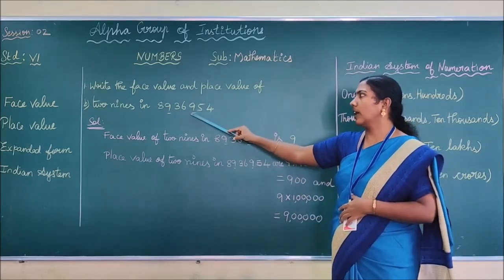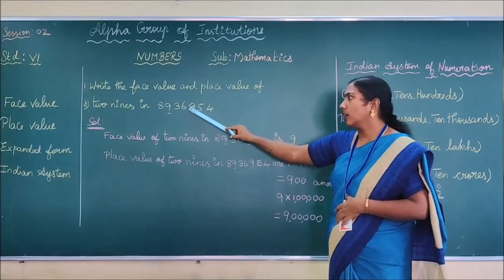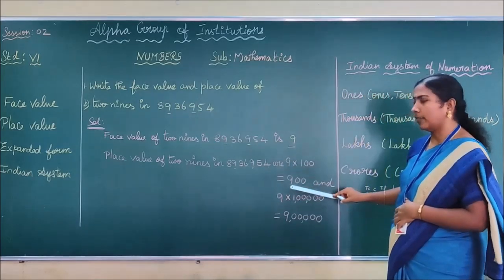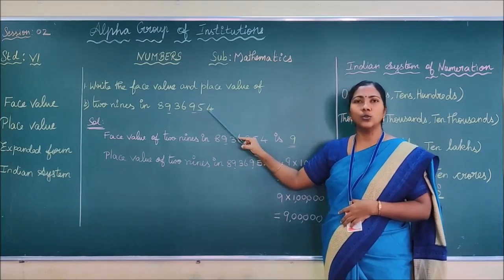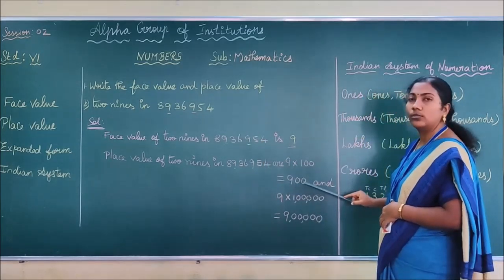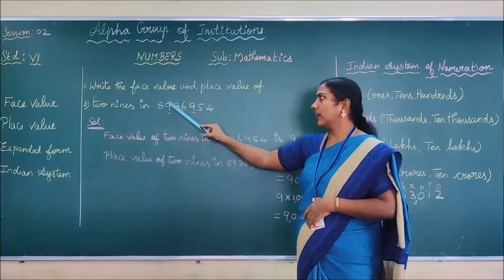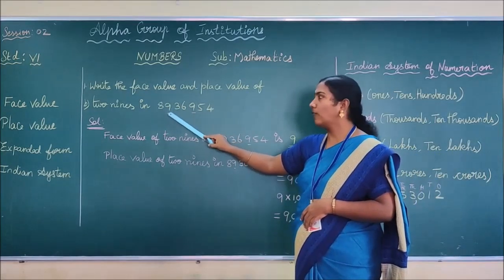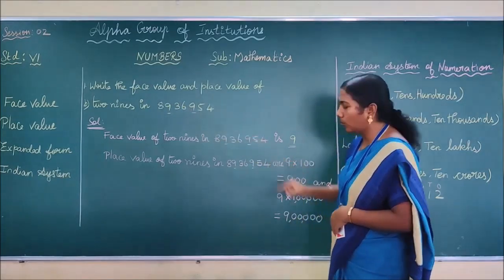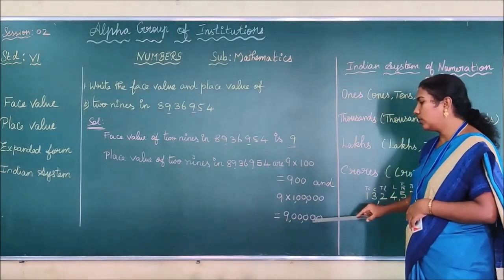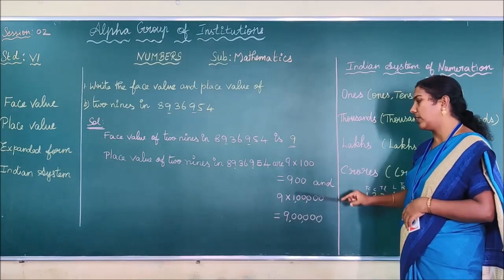First, see where the nine is located in the given number. Now write the nine. After nine, how many digits do you have? Two. So you have to add two zeros. Next, see where the other nine is located. After that nine, how many digits are there? One, two, three, four, five. So add five zeros with this nine. That's how you easily get the place value of nine.